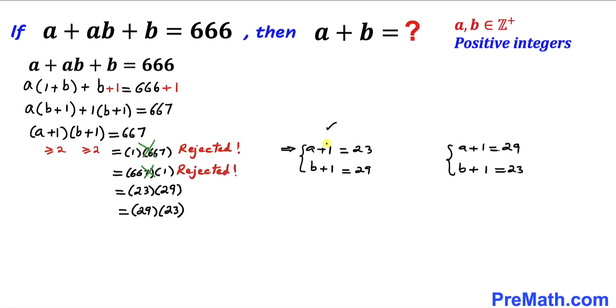Let's focus on the first scenario. Moving this to the right-hand side gives us a equals 23 minus 1, and b equals 29 minus 1. That means a turns out to be 22 and b turns out to be 28.